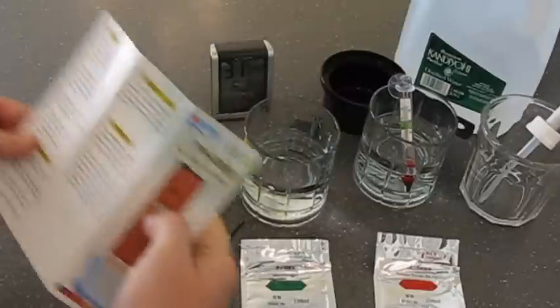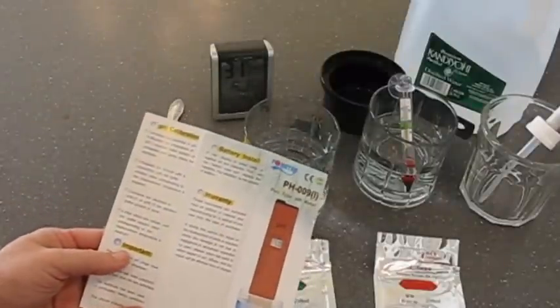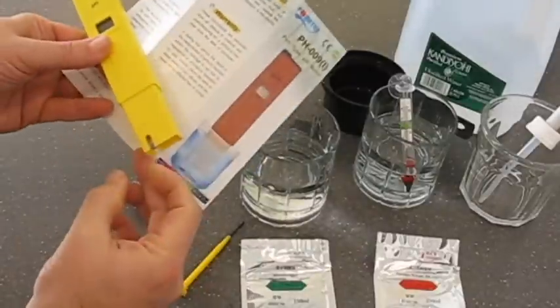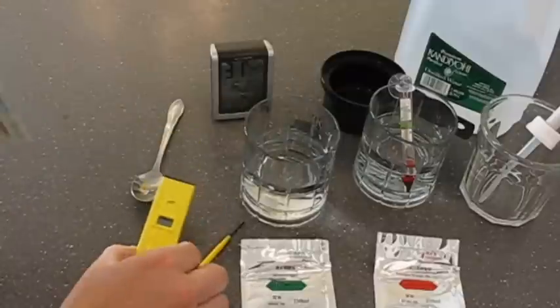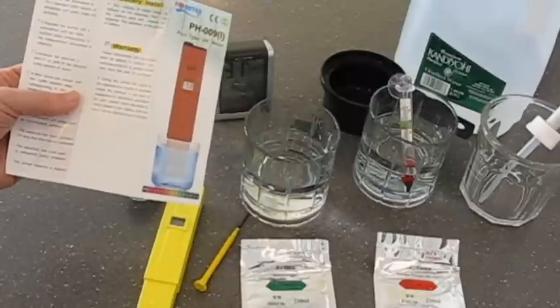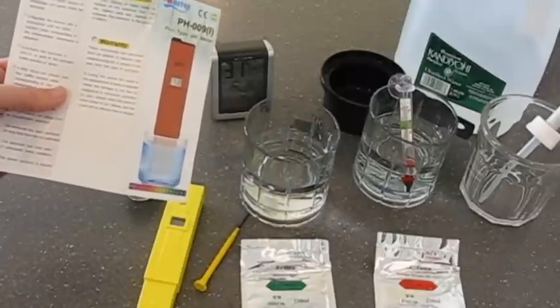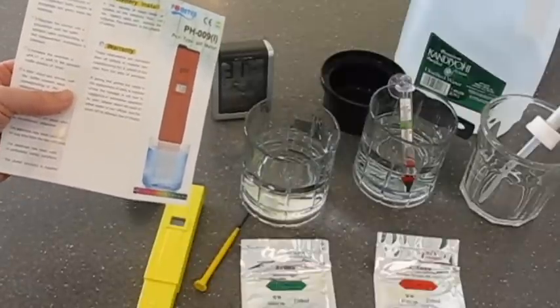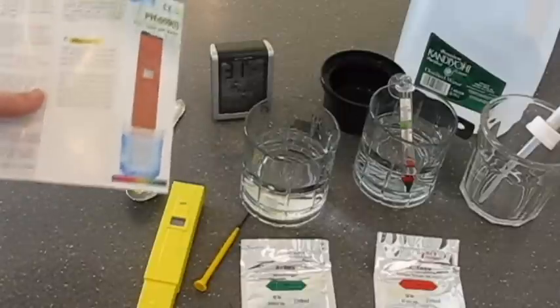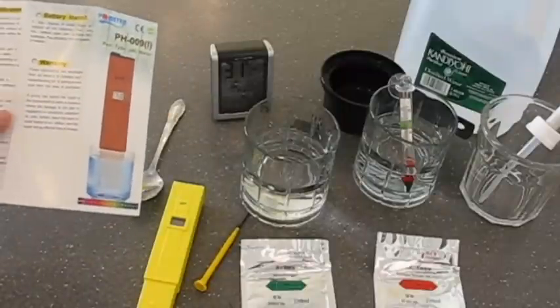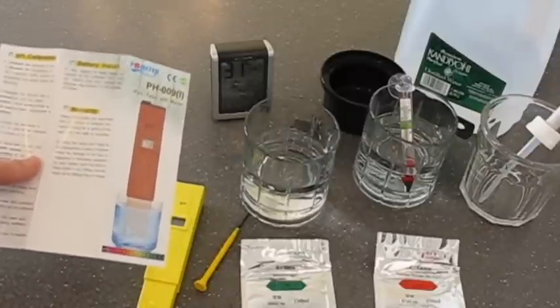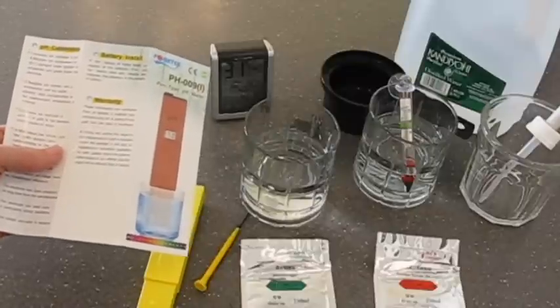But one of the instructions is that you immerse the electrode, which is this little glass ball here. You immerse the electrode in the pH 6.86 under a temperature of 25°C, 25 degrees Celsius, which is 77 degrees Fahrenheit. pH level is different depending on the temperature of the water, and so this is an important calibration step.